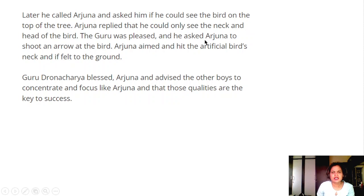Guru was pleased and he asked Arjuna to shoot an arrow at the bird. Arjuna aimed and hit the artificial bird's neck and it fell to the ground. Guru Dronacharya blessed Arjuna and advised the other boys to concentrate and focus like Arjuna and that those qualities are the key to success.